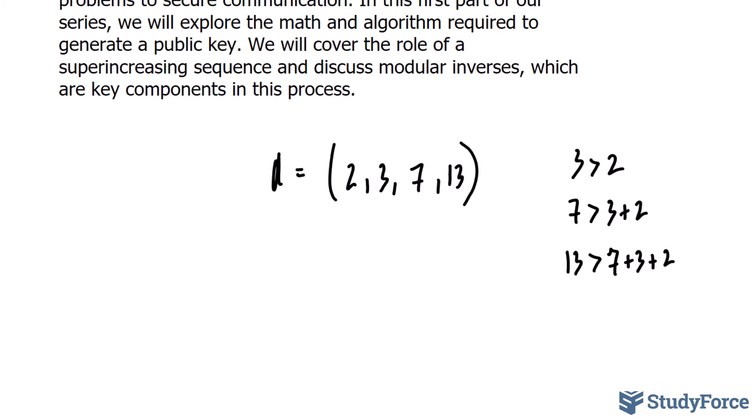Now, for the sake of simplicity, in this video, we're using a super-increasing sequence of 4 elements. But in practice, the sequence should be long enough to ensure security. For example, you should have more than 100 terms, and each number should be significantly larger. But regardless of what your super-increasing sequence looks like, it will be part of your private key, so it must be kept secret.